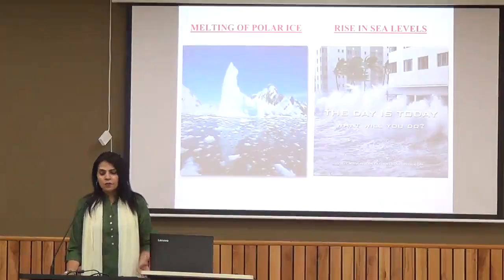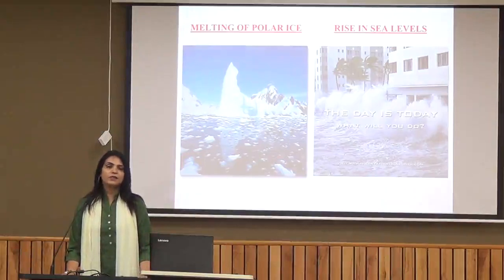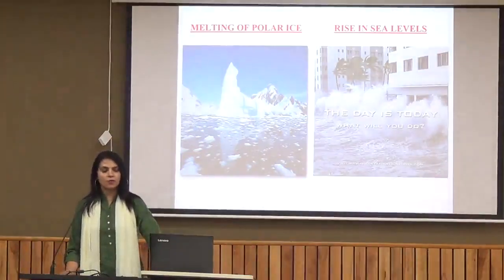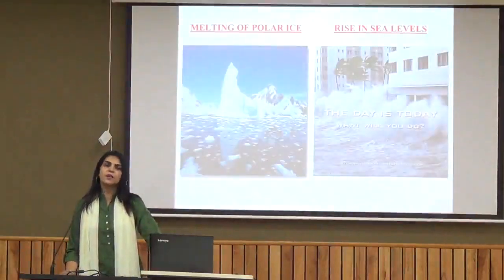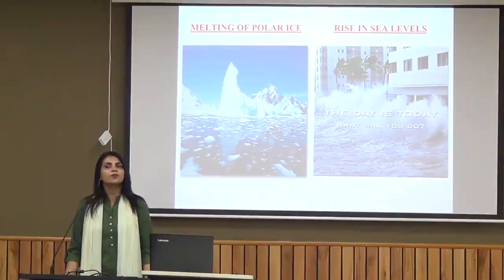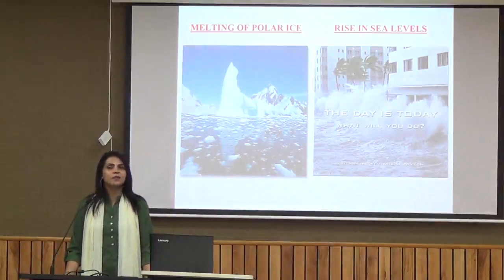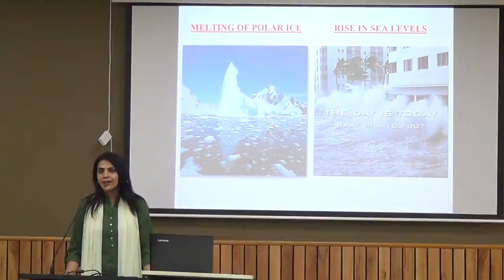The ill effects of global warming include melting of polar ice, rise in sea level — which may lead to flooding — and increasing temperatures day by day. In this particular chapter, we studied about three kinds of natural resources: forest, water, and fossil fuel, and how we can actually preserve and conserve them for our future generations. Thank you, class.